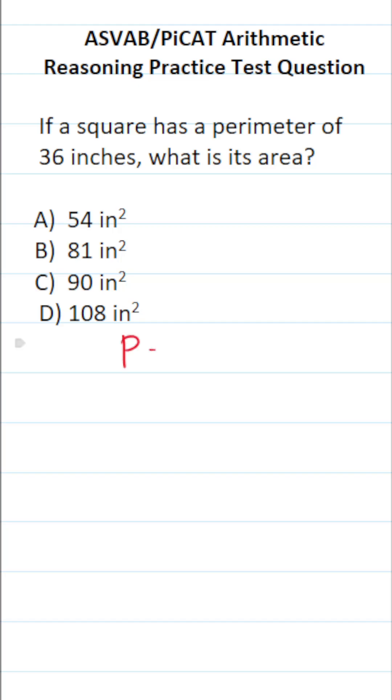The perimeter of a square, P, is equal to 4 times its side length, S. The area of a square is equal to its side length squared or S squared.